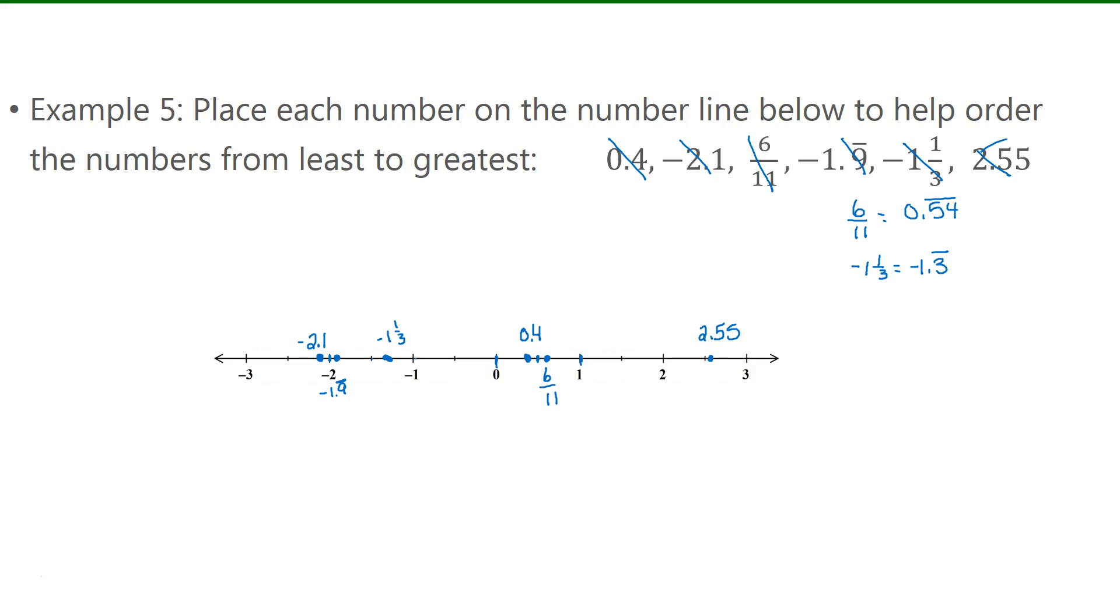And now, if I'm going to write them from least to greatest, I'm going to start furthest on the left of the number line. Negative 2.1, negative 1.9, negative 1 and a third, 0.4, 6 over 11, and 2.55. So there you go. Order it from least to greatest.